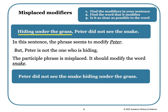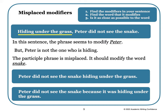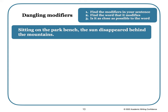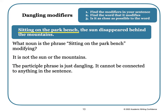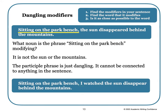Let's try: 'Sitting on the park bench, the sun disappeared behind the mountains.' We need to find the modifier — 'sitting on the park bench.' But what noun is it modifying? It's not the sun or the mountains. The participle phrase is just dangling; it cannot be connected to anything in the sentence. We need to rewrite it: 'Sitting on the park bench, I watched the sun disappear behind the mountains.' Now it is clear that I am the one sitting on the park bench.